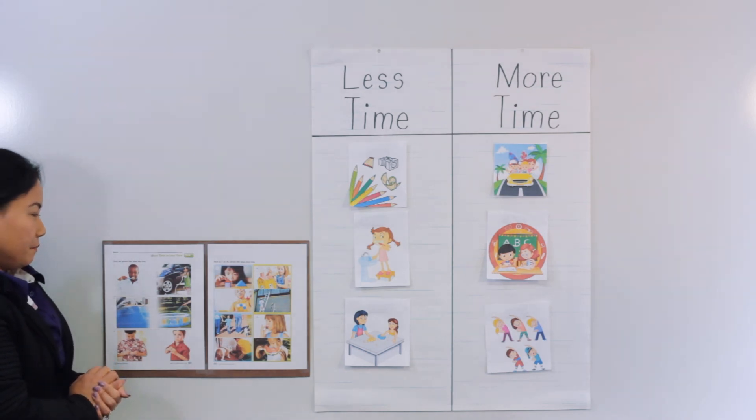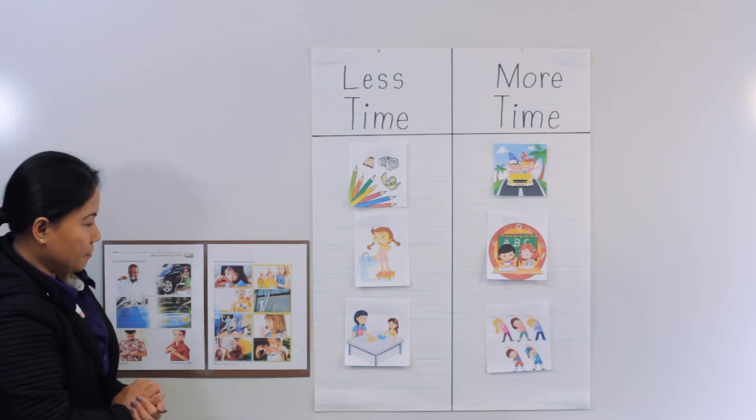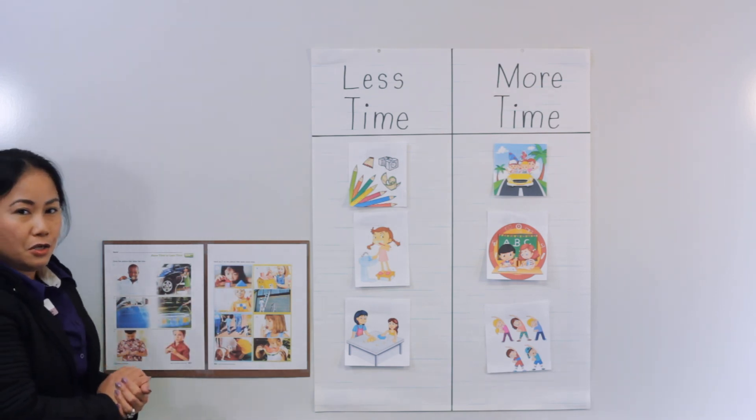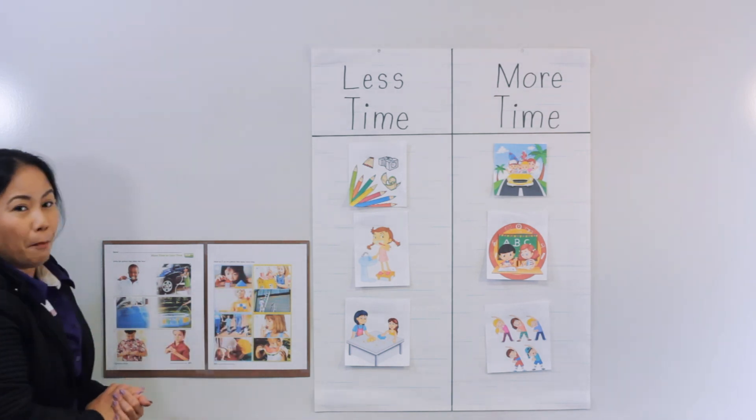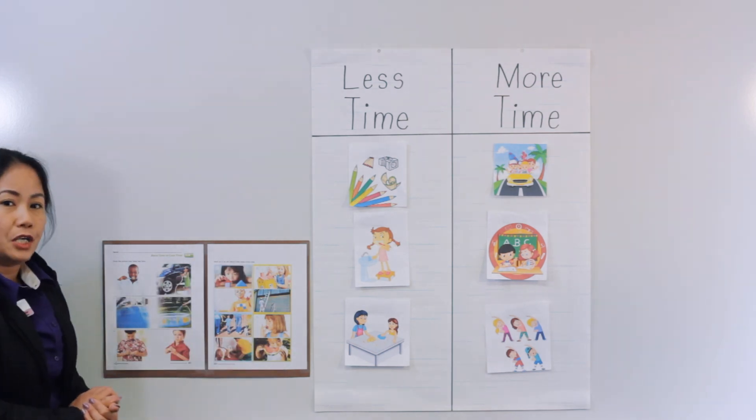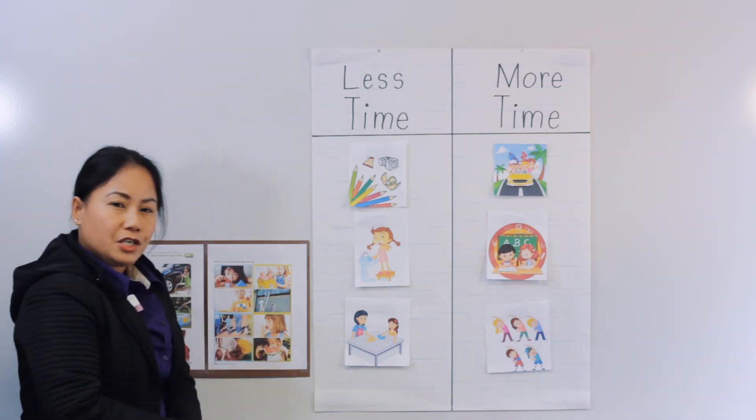And right here on the back you are going to cross out the picture that will take us more time. You are going to build your house with your toy blocks or you are going to paint your big house? So you are going to cross out the picture on the back side that will take you more time. If you have any questions just let me know and I'll see you next time.